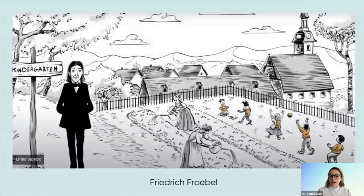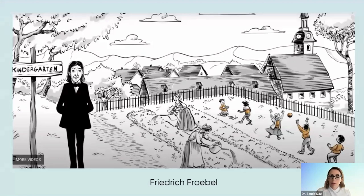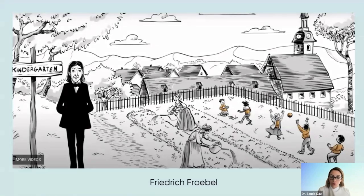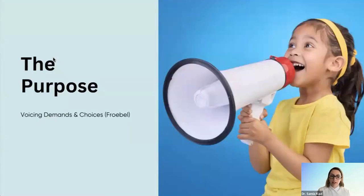If you've been studying child development, you might have heard about the German educator named Frederick Froebel. He was born on the 21st of April in 1782, and he is documented to have come up with the term 'kindergarten.' He believed that play was the highest expression of human development in childhood — the only way children could express what was truly in their soul. According to Froebel, the purpose of circle time is so that children get a chance to voice out their demands and wishes.